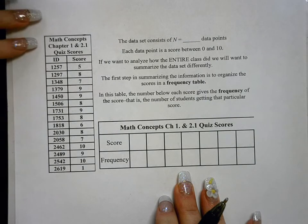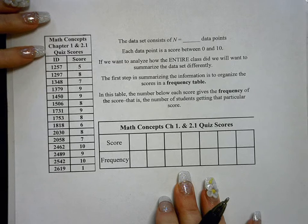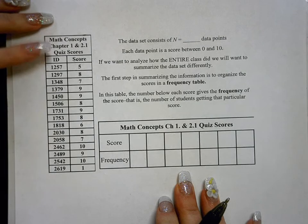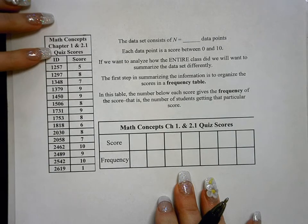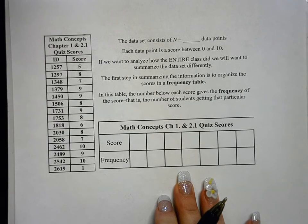In this example we will be looking at this table of data dealing with the math concepts chapter 1 and 2.1 quiz scores. Now this particular quiz has a total of 10 questions. So the scores, each student gets one point for each question that they answer correctly. So the scores range from a total of 0, that would be not getting any questions right, to 10 which would be 100%, getting all 10 questions right.